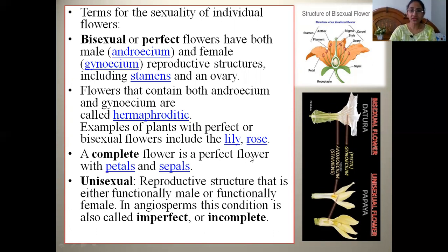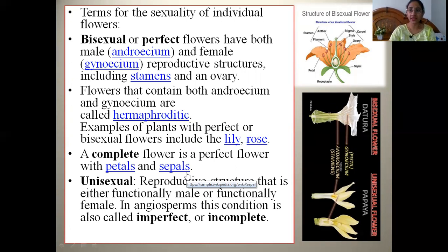A perfect flower will have sepals, petals, stamens, carpels, ovary, ovules, stigma, style, androecium, and gynoecium — all reproductive parts present in perfect functional condition. That flower is called hermaphrodite, bisexual, or a perfect flower.